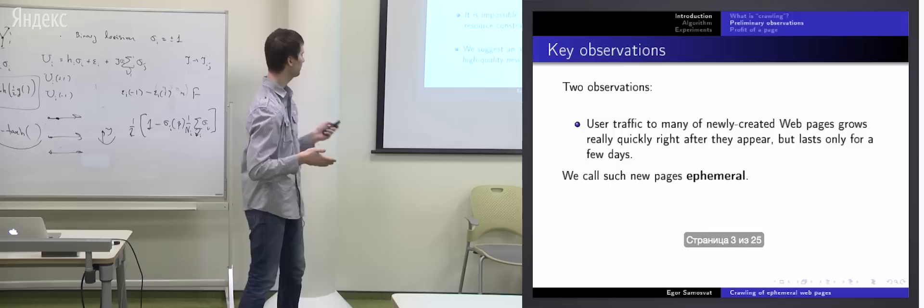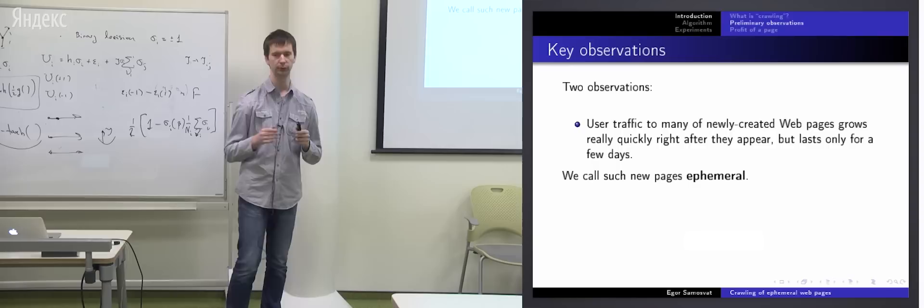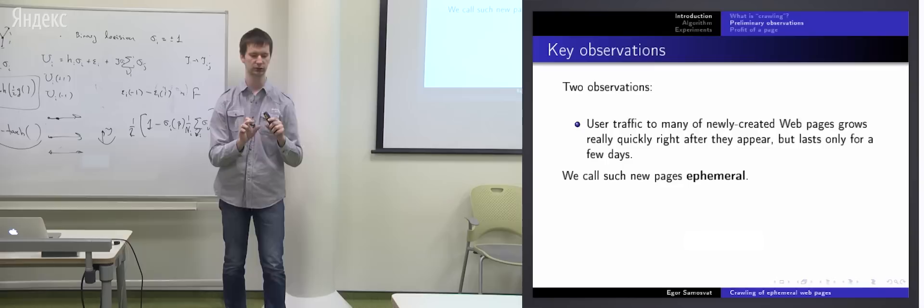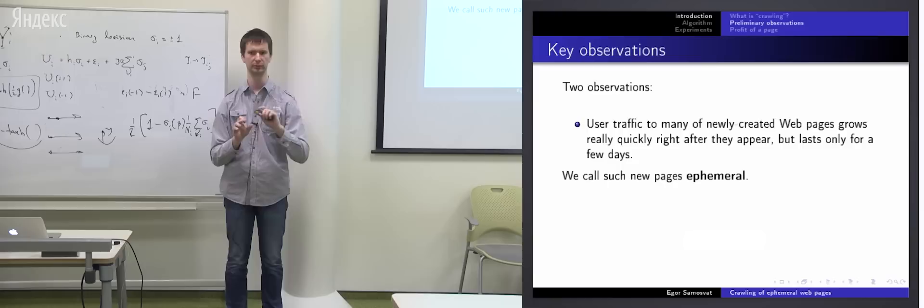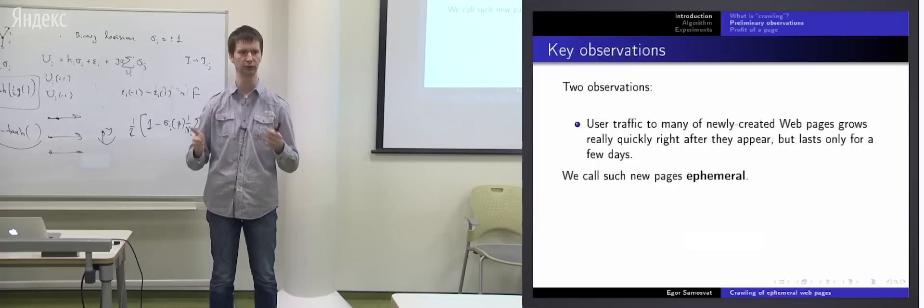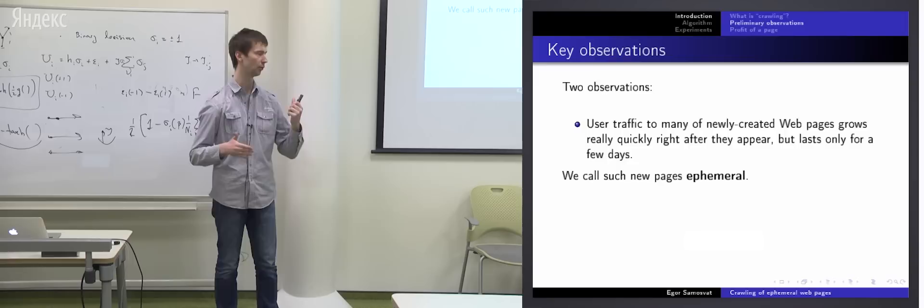And there are two key observations. First of all, many of the newly created web pages in the web are ephemeral in terms of user interest. It means that most of the pages are visited by users only for a short period of time, typically several days. A good example of such pages, of course, news, blog posts, and so on. But as we analyzed, the most of the pages in the internet are of this nature.